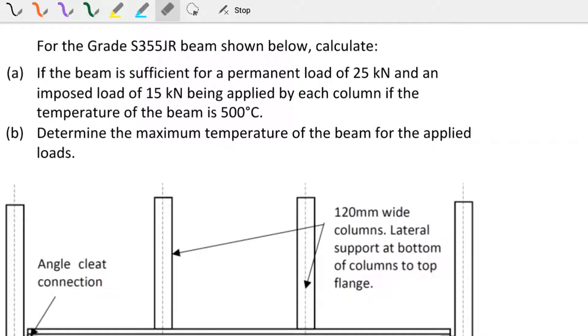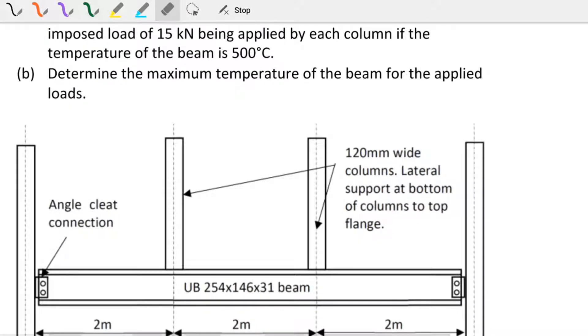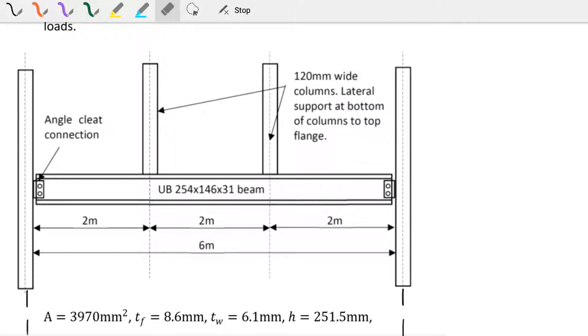Just to go through the question: for the grade S355 JR beam shown below, calculate (a) if the beam is sufficient for permanent load of 25 kilonewtons and an imposed load of 15 kilonewtons being applied by each column if the temperature of the beam is 500 degrees Celsius, and (b) determine the maximum temperature of the beam for the applied load. So there is a cross section through the beam, make sure you have the set of notes that go with this example so you have the full question and specifications.